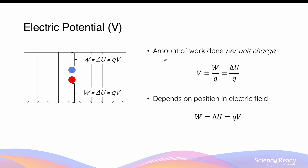The term electric potential, represented by the symbol capital V, is closely related to electric potential energy. It is defined as the amount of work done per unit charge — in other words, work divided by charge Q. Algebraically, it is given by the equation V = W/Q. Since work in the context of an electric field also equals the change in the charge's potential energy, we can also say that electric potential equals the change in U divided by the charge.